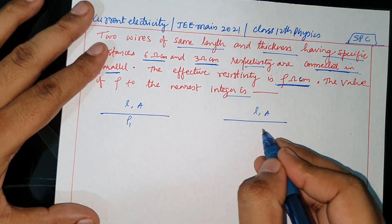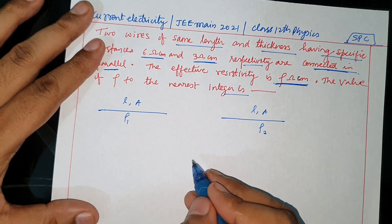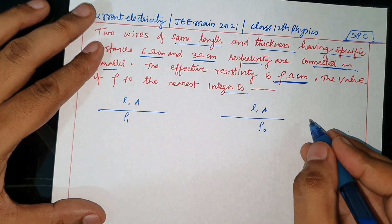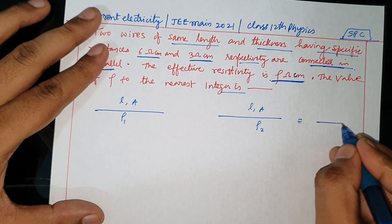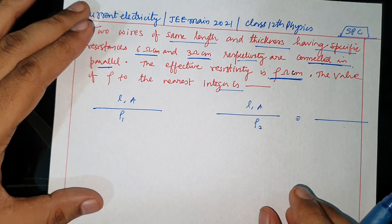But this resistance is rho 1 and this resistance is rho 2. Now, if we connect these two parallel to parallel, then we find the effective resistivity.